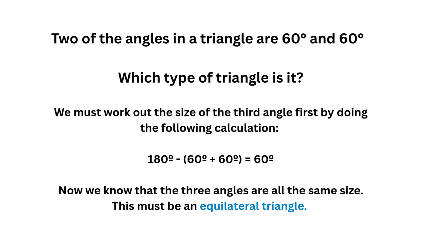Next question: two of the angles in a triangle are 60 degrees and 60 degrees. We know the three corners of a triangle add up to 180 degrees, so it must be 60 degrees because 60 plus 60 plus 60 is 180. This triangle has three angles all the same size, so it must be an equilateral triangle.